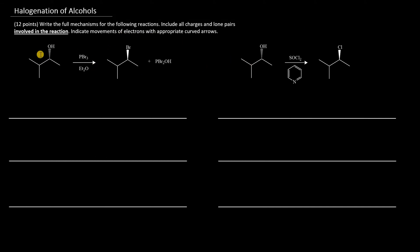These two reactions involve using an alcohol as the substrate and forming an alkyl bromide or an alkyl chloride, which is inverted at the chiral center. The reagents we use are PBr3 to form the alkyl bromide, and SOCl2 with pyridine as the base for alkyl chloride from alcohols.